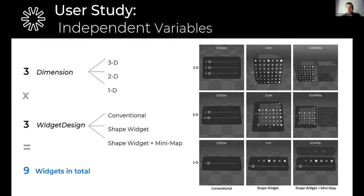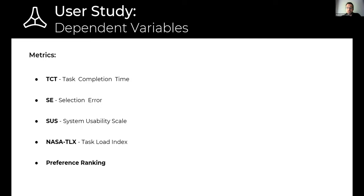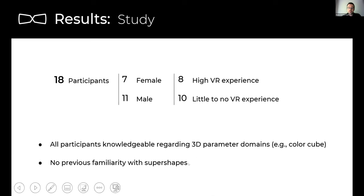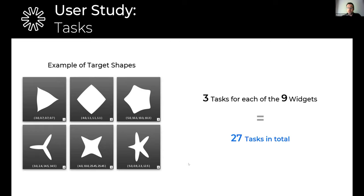In terms of metrics, we compared the widgets for selection efficiency, accuracy, perceived usability, and task load, as well as participant satisfaction and preference. We managed to recruit a total of 18 participants, eight of which had VR experience, but none knew what a super shape was. We performed a within-subject evaluation, and each participant performed a total of 27 tasks, testing all 9 widgets.